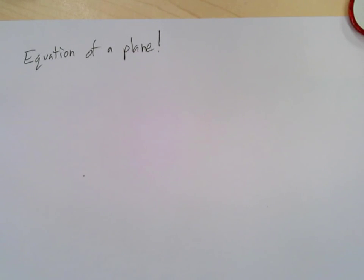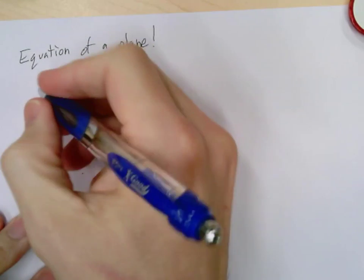All right, so now we're going to look at the equation of a plane. Now we've already done equations of lines, right? We did equations of lines, and the equation of a line looked like this.